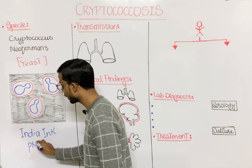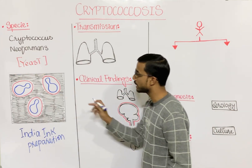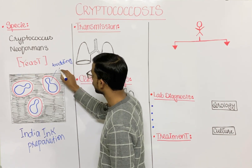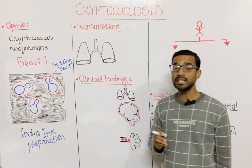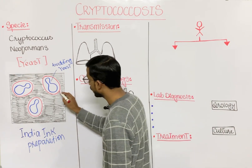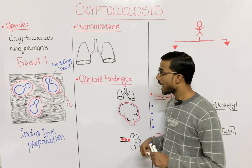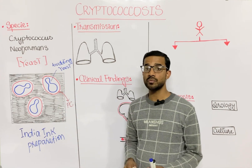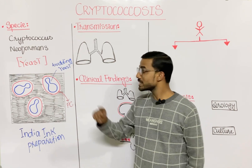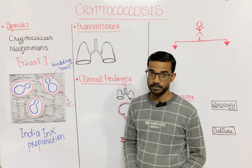If you look here, you can see the budding yeast, and around the budding yeast you will see the presence of a polysaccharide capsule — a thick polysaccharide capsule. The background against the yeast will be dark due to the India ink preparation. India ink does not stain the yeast; instead it makes the background dark.